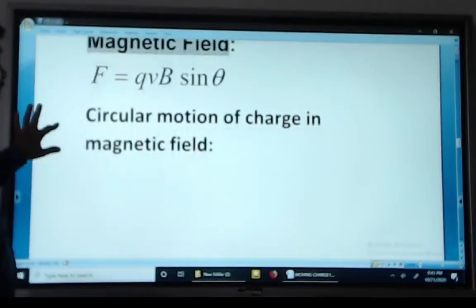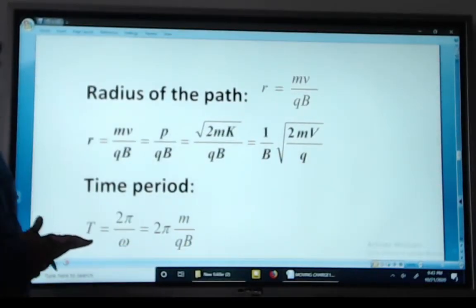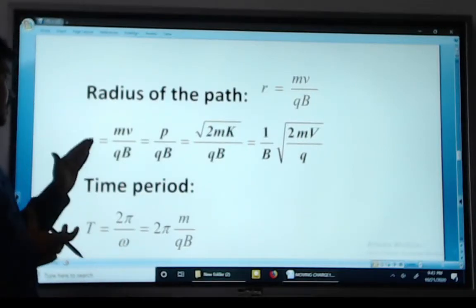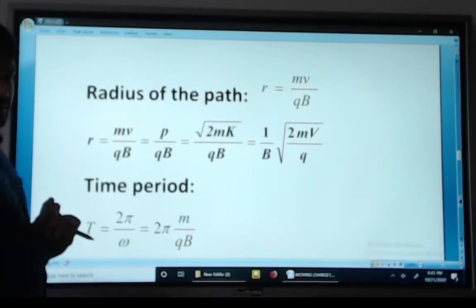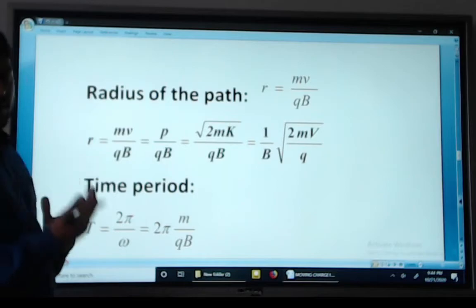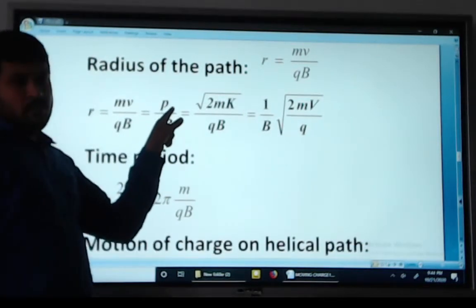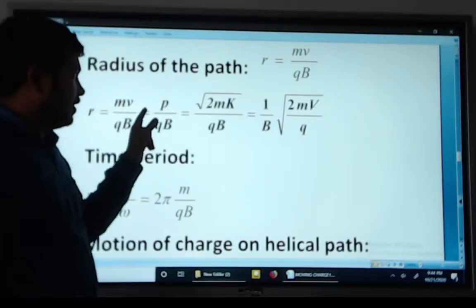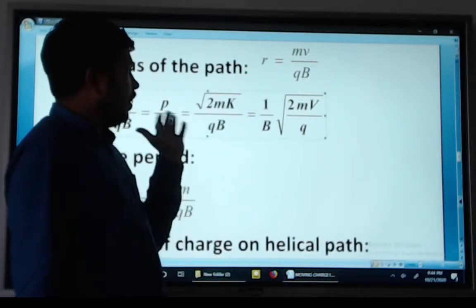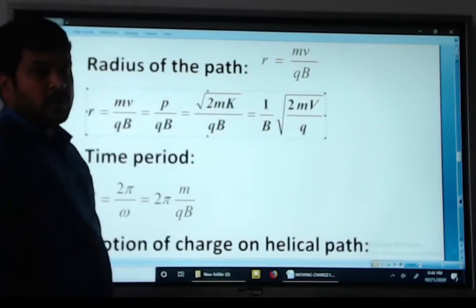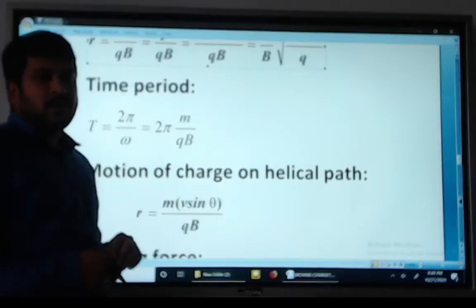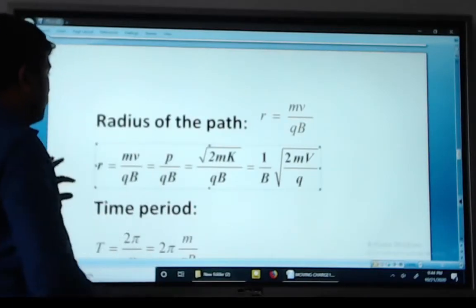For circular motion of a charge particle in a magnetic field, the radius of the path is R equals MV divided by QB. Here R is the radius, M is the mass, and V is the velocity. This can be modified to R equals momentum divided by QB, or in terms of kinetic energy: R equals root of (2MK) divided by QB. The time period is T equals 2 pi M divided by QB.